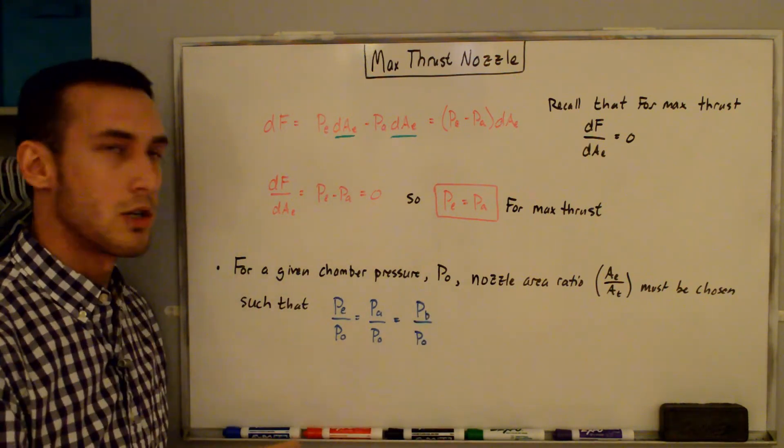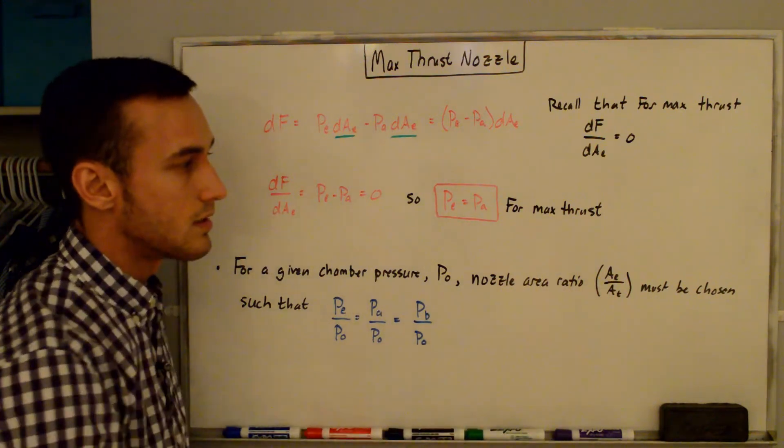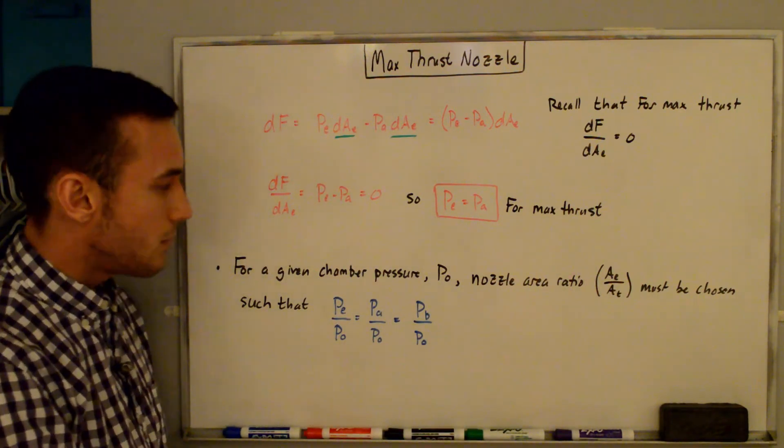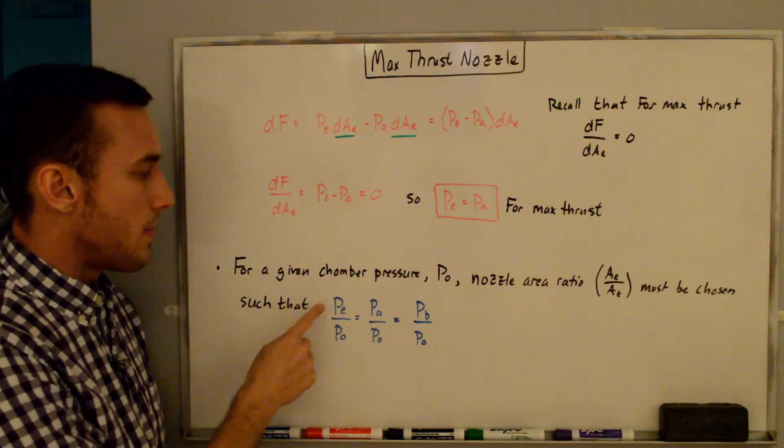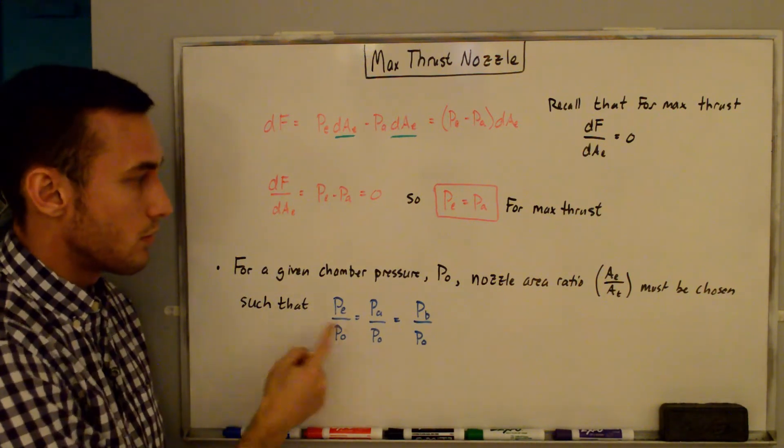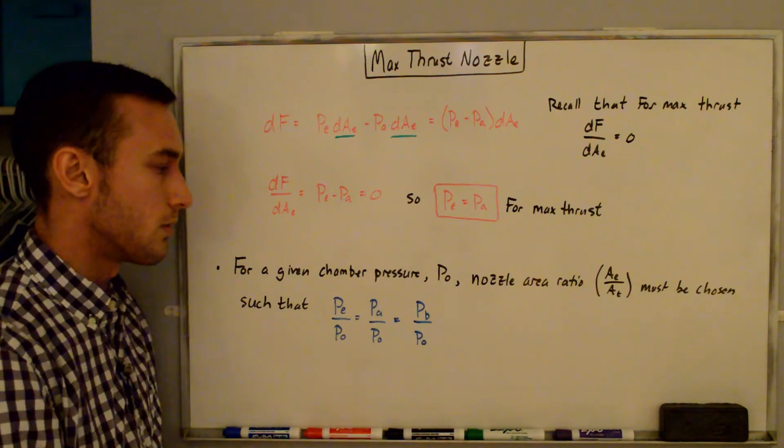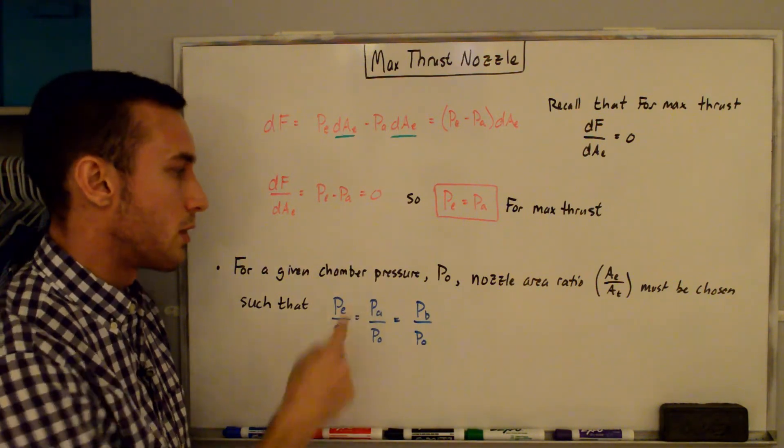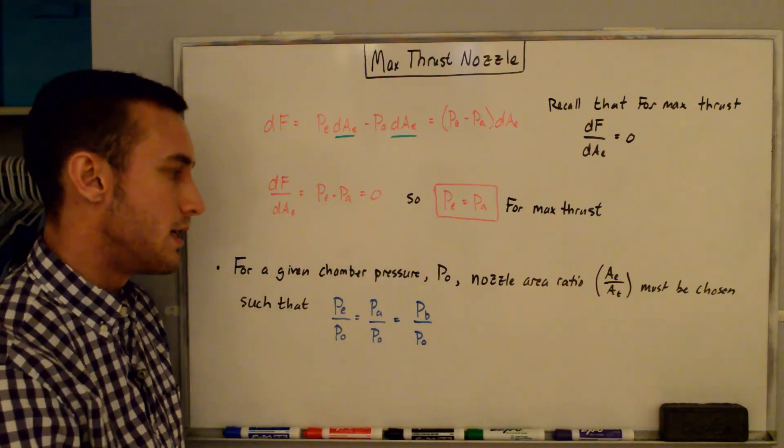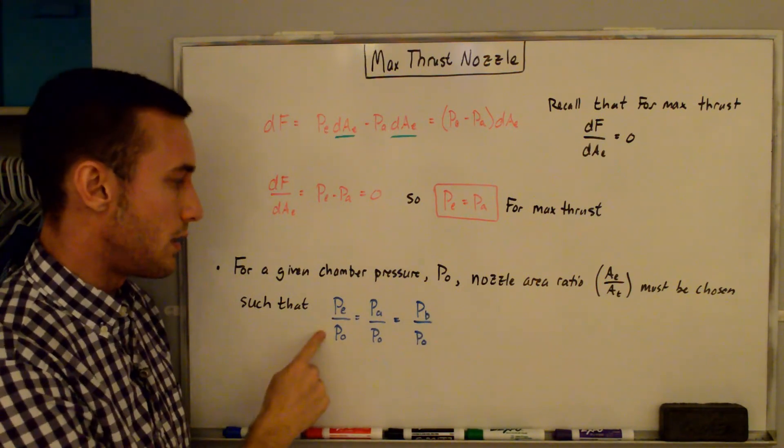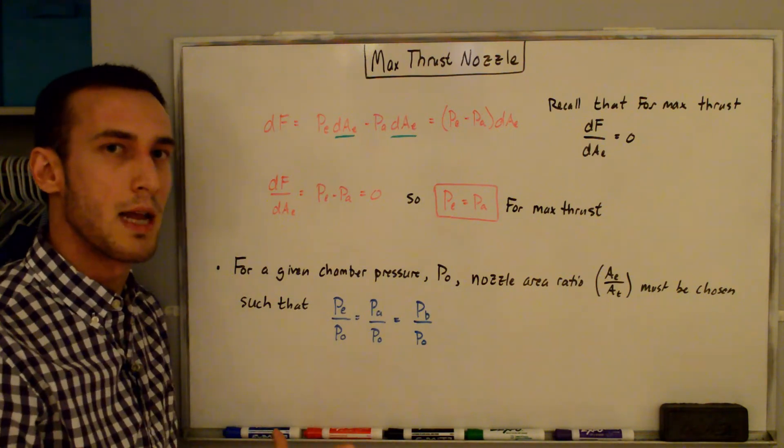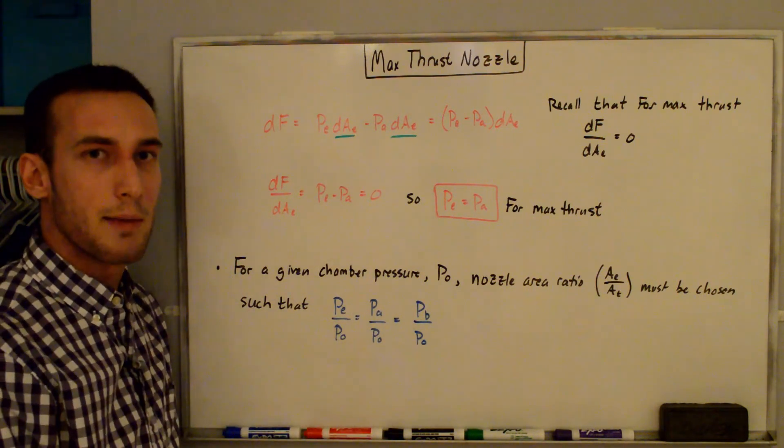Let's say you've designed a rocket for a chamber pressure or reservoir pressure or stagnation pressure of p₀. Then the nozzle area ratio, AE/AT, which is the exit area of the nozzle over the throat area of the nozzle, has to be chosen such that you have the exit pressure over the stagnation pressure or reservoir pressure is equal to the atmospheric pressure over the stagnation or reservoir pressure. If you've watched my converging diverging nozzles video, I call the atmospheric pressure the back pressure, pB, so I've just written that here, that pE/p₀ = pB/p₀, when you've isentropically or ideally expanded the gases out to the back pressure.